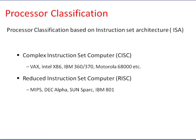Processor classification. Instruction set architecture, ISA, plays an important role in the design and functioning of a processor. The microprocessors are classified as either CISC, complex instruction set computer, or RISC, reduced instruction set computer.